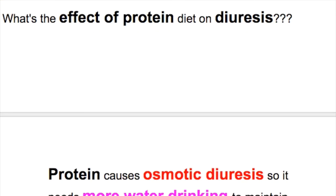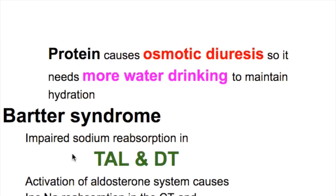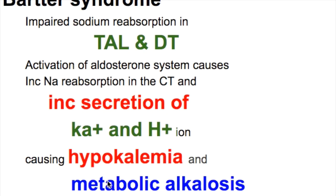Osmotic diuresis from protein meals requires increased water intake to maintain hydration. Bartter syndrome also causes osmotic diuresis, with impaired sodium reabsorption in the thick ascending limb and distal tubule. As a consequence, activation of the aldosterone system causes increased sodium reabsorption in the collecting tubule and increased secretion of potassium and hydrogen ion, causing hypokalemia and metabolic alkalosis.